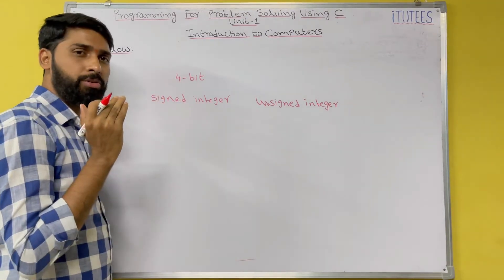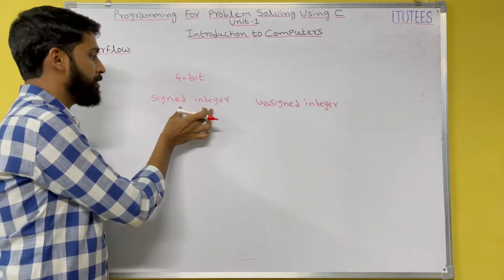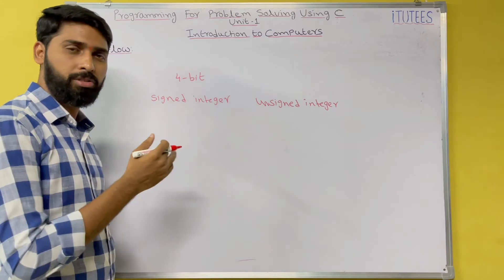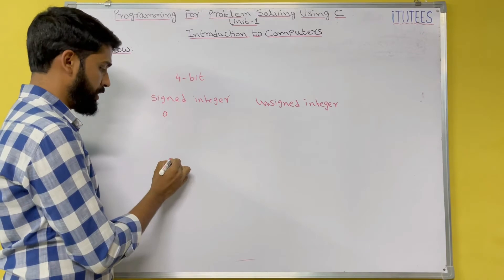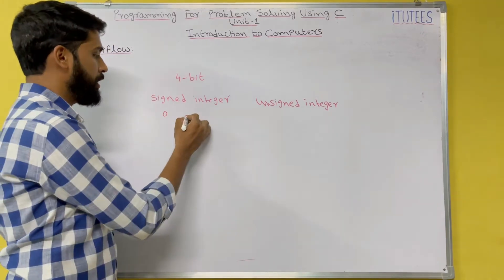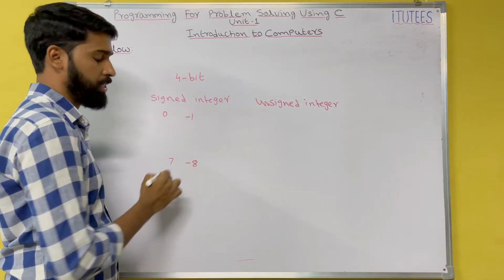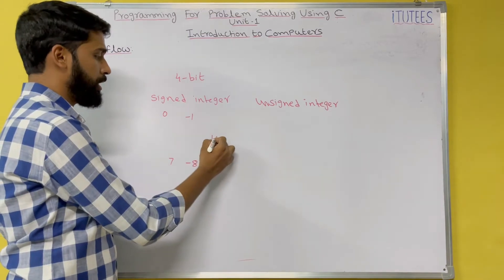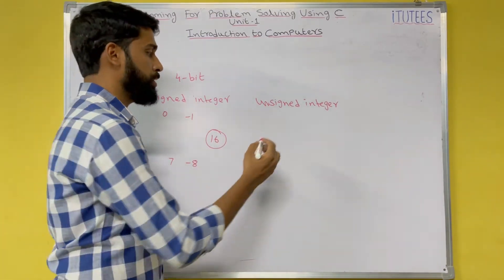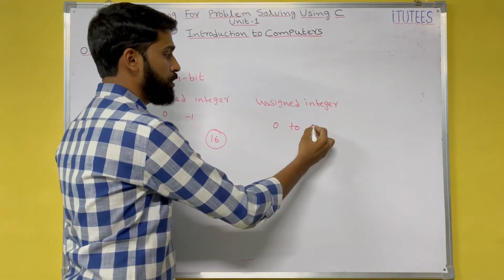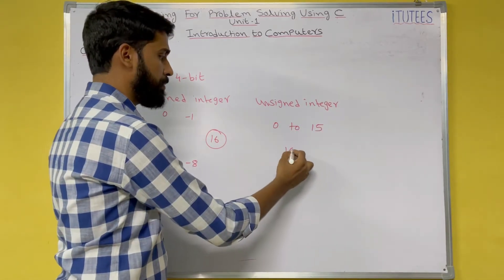How many numbers can you store with the help of signed integer? By using 2's complement, from 0 to 7 and minus 1 to minus 8, total 16 numbers. And by using unsigned integer, how many numbers can you store? 0 to 15 only, so total 16 numbers.